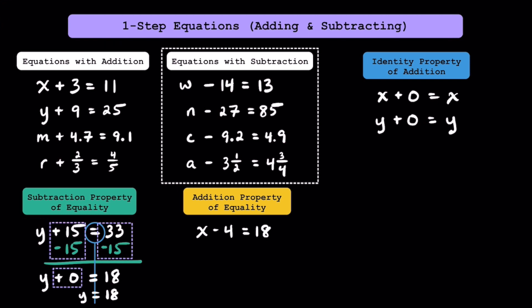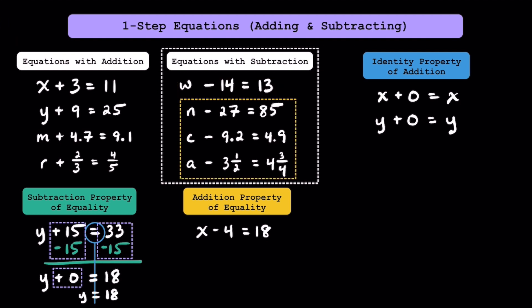Now let's look at some equations that have subtraction. Even though these four equations have different variables and different types of numbers, they all have subtraction. Consider this equation w minus 14 is equal to 13. Try to think of the one number in the world that makes this true. If you're thinking 27, good job — you're right. The only number in the world that makes this equation true is 27. Every other number besides 27 will create a false equation. You must have worked backwards and added 13 plus 14 to get 27. You would apply that same strategy to the other three equations to find the value of n, c, and a.